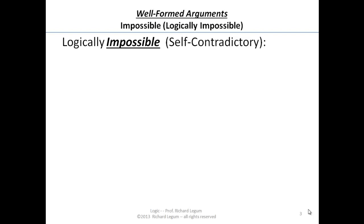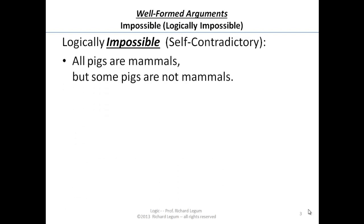Let's get a couple of examples of things that are logically impossible. For example: all pigs are mammals, but some pigs are not mammals. You see, that contradicts itself. Both of those things can't be true. It can't be true that all pigs are mammals and some pigs aren't. It's a contradiction — that's what we mean by logically impossible.